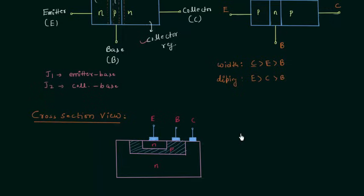You can also draw the cross-sectional view for the PNP transistor. Everything will remain the same — the only thing you have to do is replace the two N-type materials with P-type materials and the P-type material with N-type material.